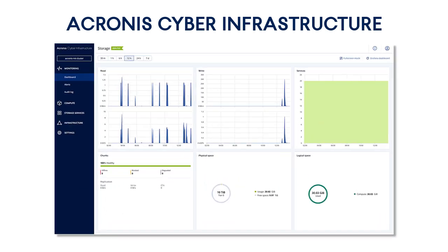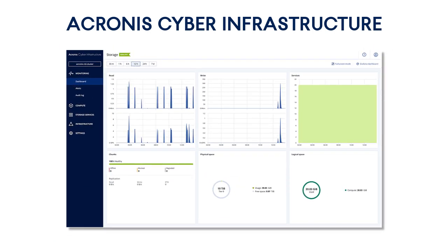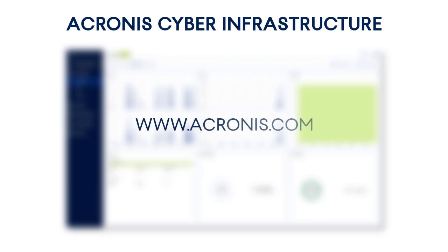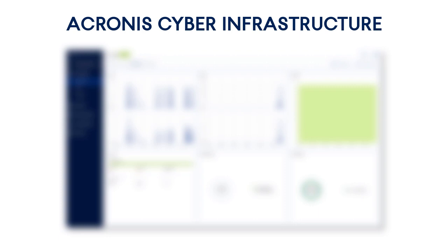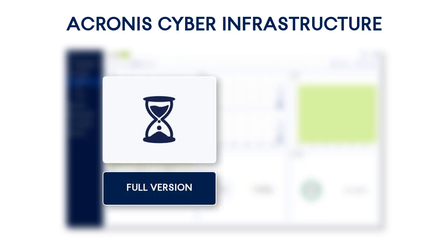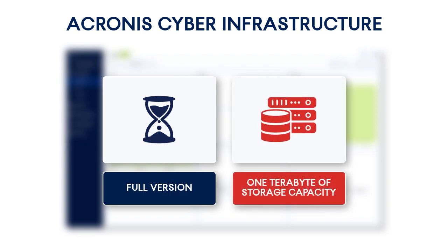Are you excited about the capabilities of the Acronis Cyber Infrastructure? You have an opportunity to try our easy, efficient, and secure cyber protection solution right now. Just go to our website at www.acronis.com and download a trial version of the Acronis Cyber Infrastructure. Please note that the trial version is actually a full-fledged version with all functionality and no time constraints. The only limitation is you only get one terabyte of storage capacity for storing your customers' data.